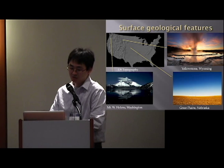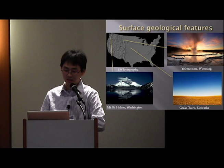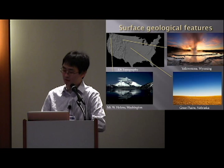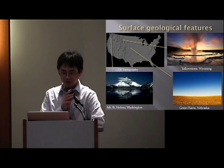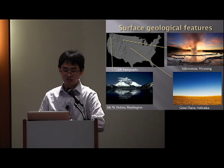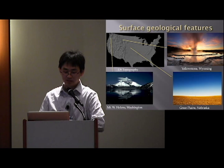Western US is obviously a very interesting place to study lithosphere structure. In particular, we have a lot of topography variation across the US — a rougher surface near the Western US compared to the Eastern US, and in general the topography is high. We also have a lot of volcanism, including Mt. St. Helens in Washington, as well as Yellowstone in Wyoming.